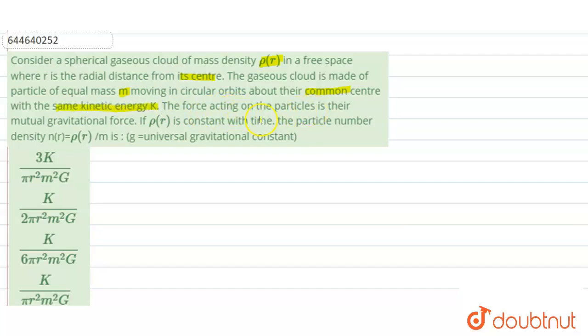The force acting on the particles is their mutual gravitational force. Now if rho(r) is constant with time, so rho(r) does not change with time, the particle number density that is we have to find rho divided by m, the value of rho divided by m. Now let us try to analyze this problem.